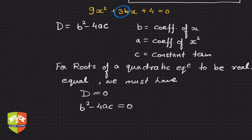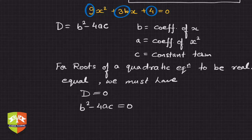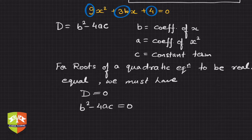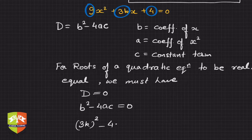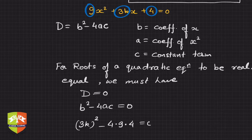The task is very simple now — deploy the values. So we have 3k whole squared minus 4 times 9 times 4 equals zero.